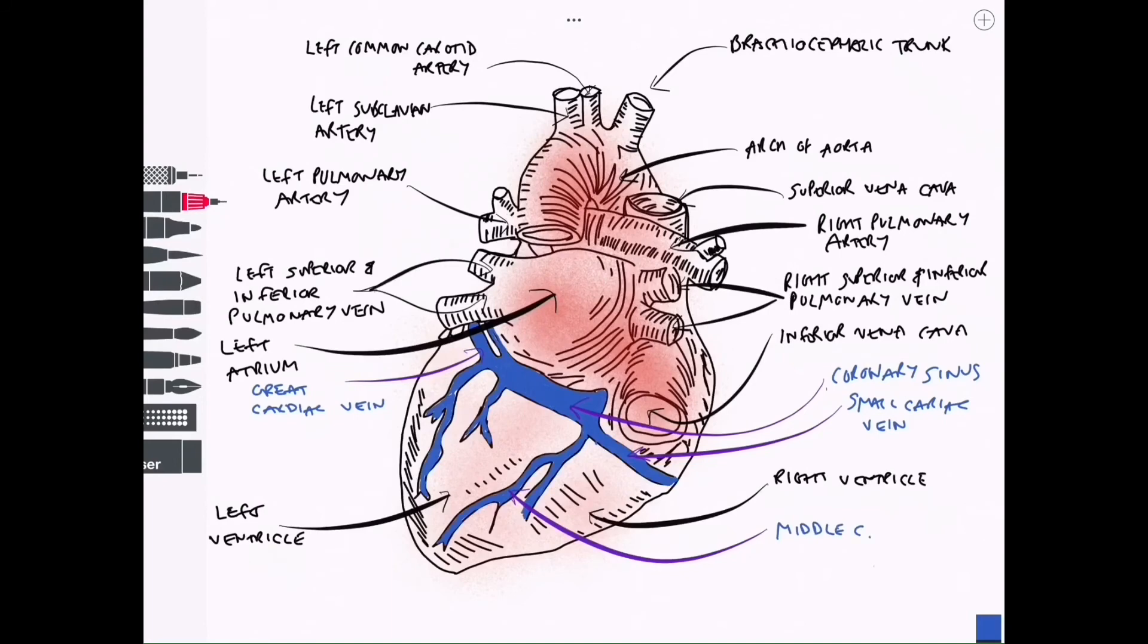The coronary sinus opens into the right atrium via an opening that exists between the inferior vena cava and the right atrioventricular orifice near the tricuspid valve.